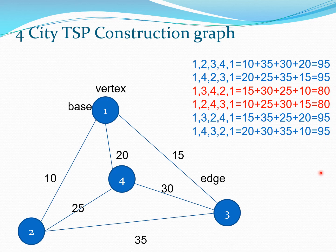Finding the optimal route results in savings of money and, if you are using any kind of vehicle, it also reduces your carbon footprint. So it is certainly helpful for sustainability purposes. The TSP is a very important problem because in many real-life situations we have to travel between different locations and we want to minimize the time required.